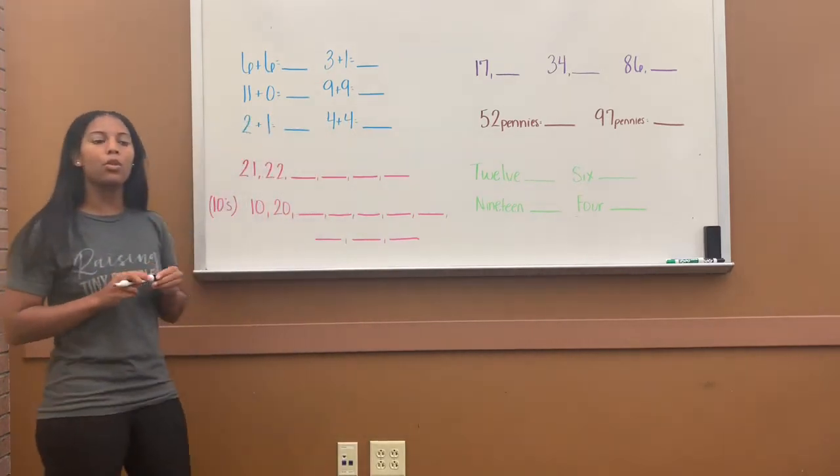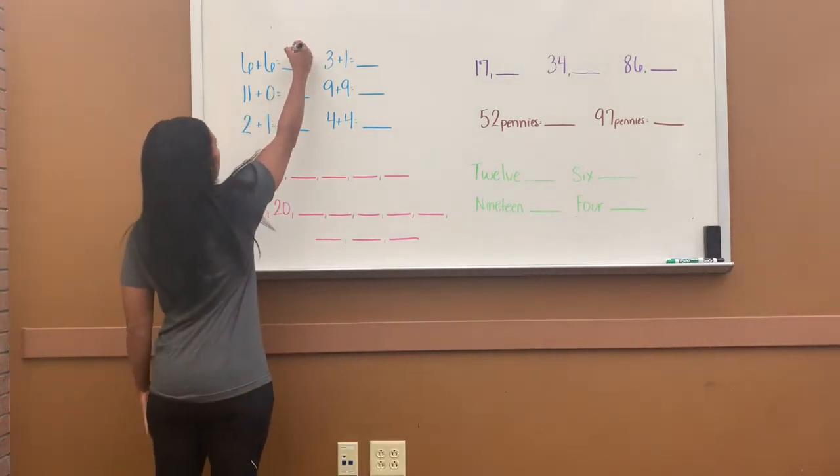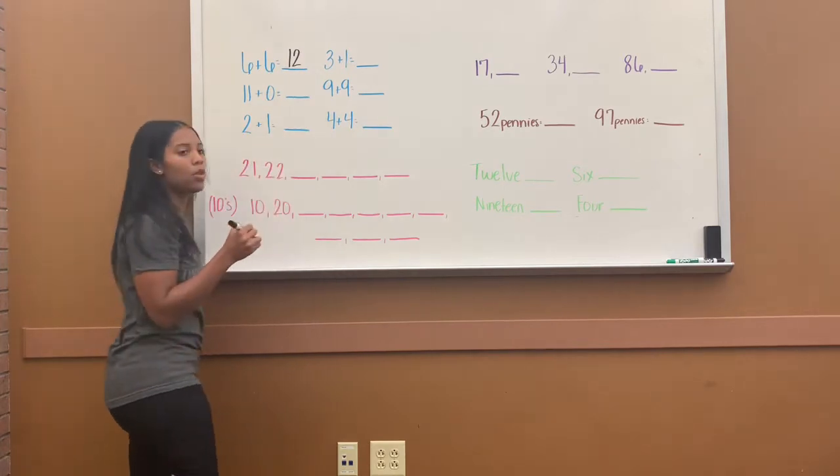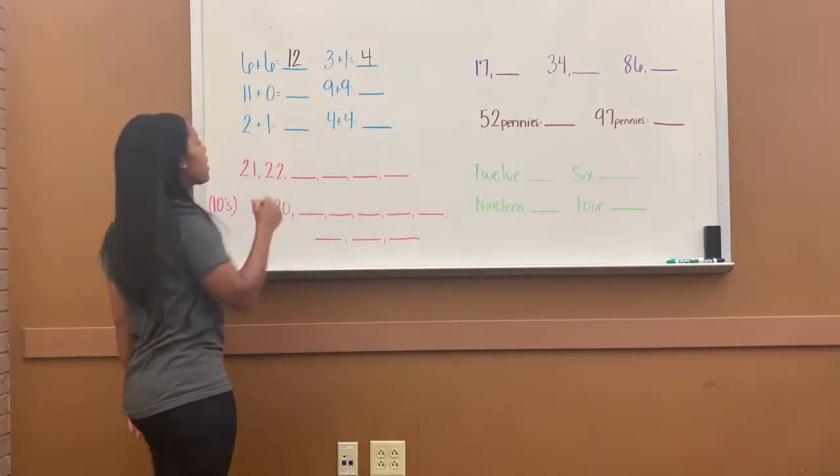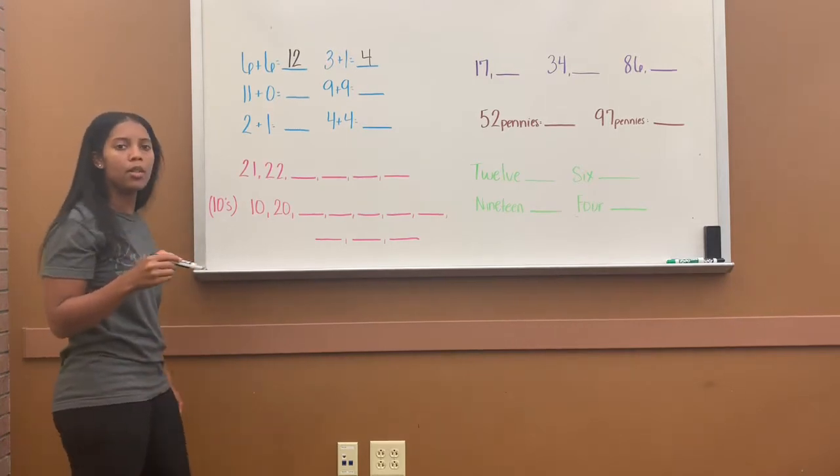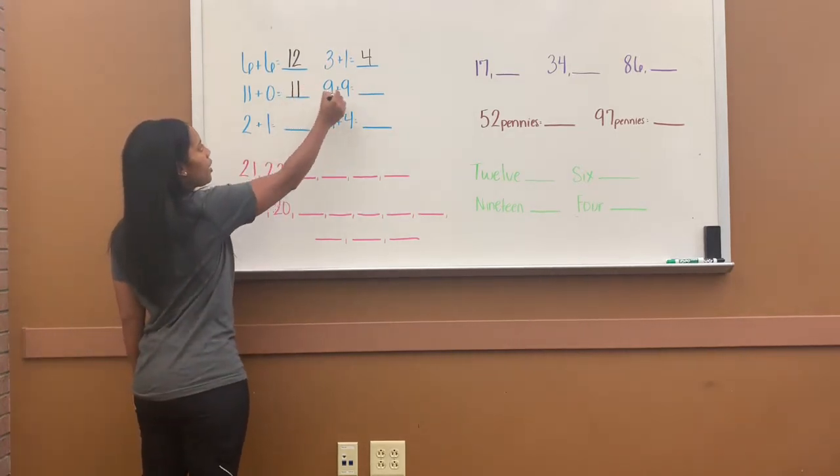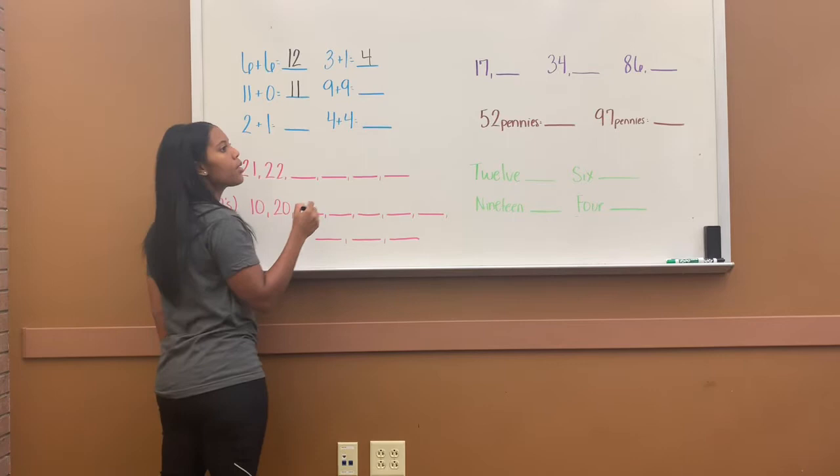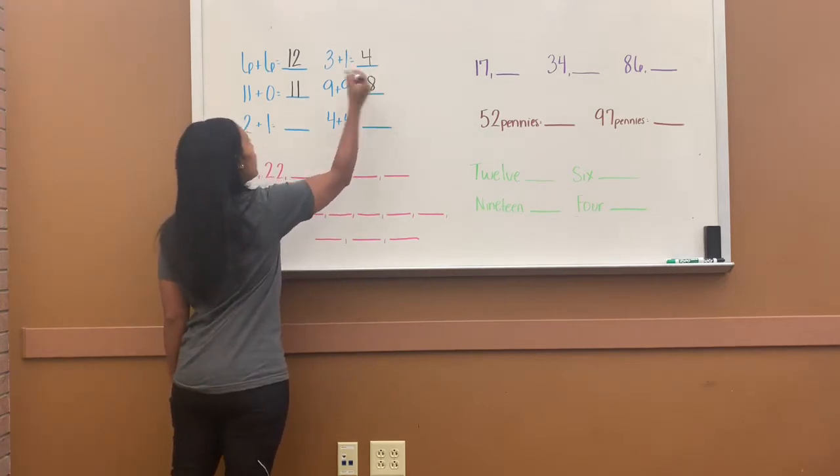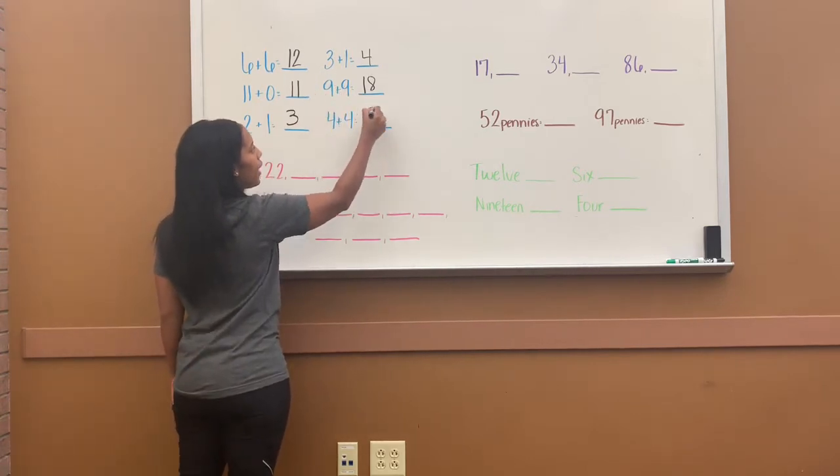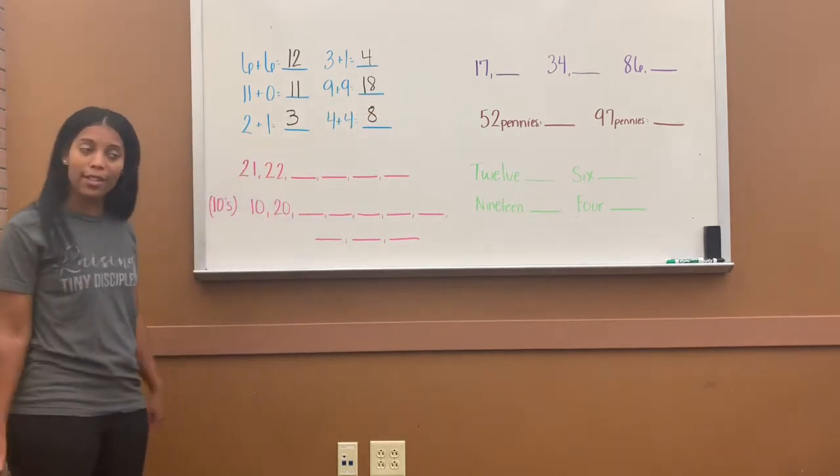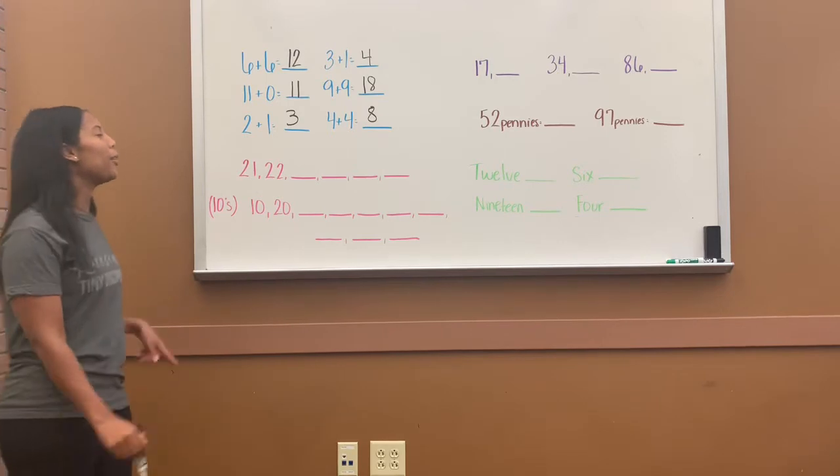So I have 6 plus 6, that would equal 12. 3 plus 1 equals 4. 11 plus 0 equals 11. 9 plus 9 equals 18. 2 plus 1, 3. And 4 plus 4, 8. Did you get those fast? Did you say it before me? I hope you did.